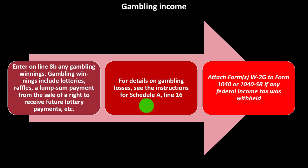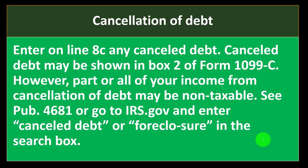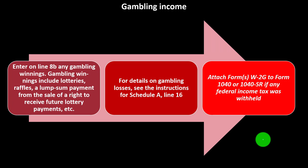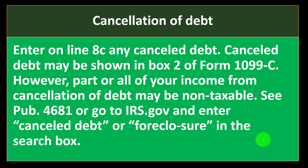Attach Form W-2G to Form 1040 or 1040-SR if any federal income tax was withheld. If winnings were substantial, you may have withholding requirements similar to W-2 withholdings. You might also have the option to withhold a portion voluntarily — because if you won a large amount with no withholdings, you'd face significant tax consequences.